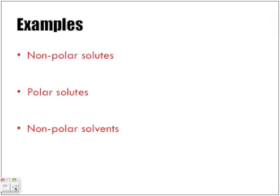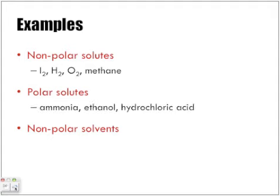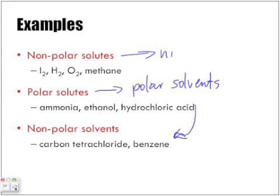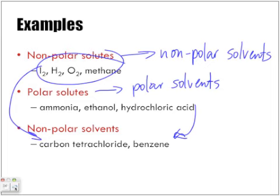Let's look at a few examples. Non-polar solutes include iodine, hydrogen, oxygen, and methane — these will not dissolve in water. Examples of polar solutes include ammonia, ethanol, and hydrochloric acid — these all have slightly positive and slightly negative ends that allow interaction with water. Non-polar solvents include carbon tetrachloride and benzene. Polar solutes dissolve in polar solvents; non-polar solutes dissolve in non-polar solvents.